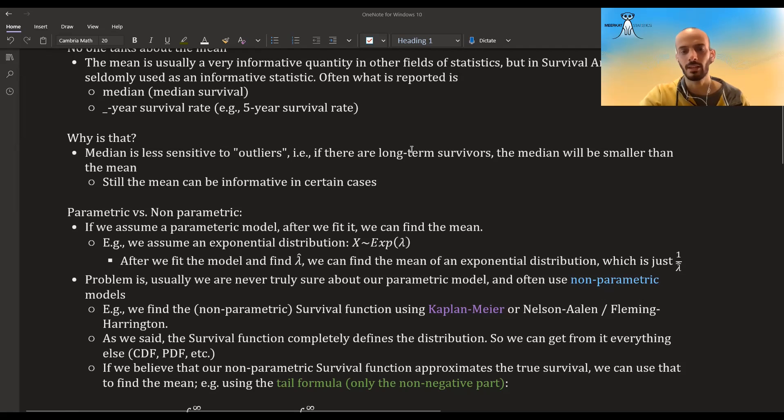So for example here we have time, and if we have a group of survivors that survived a very long time, they will pull the mean towards them. They will make the mean larger than the median and maybe it's not very informative for us, but still it can be informative in some cases. So I don't think this truly explains why the mean is not often used.